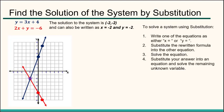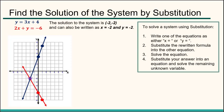Now to solve a system using substitution, what we're going to do is write one of the equations as either x equals or y equals, whichever one is easiest. Then we'll substitute the rewritten formula into the other equation. Then we'll solve the equation and substitute our answer into an equation and solve for the remaining unknown variable.